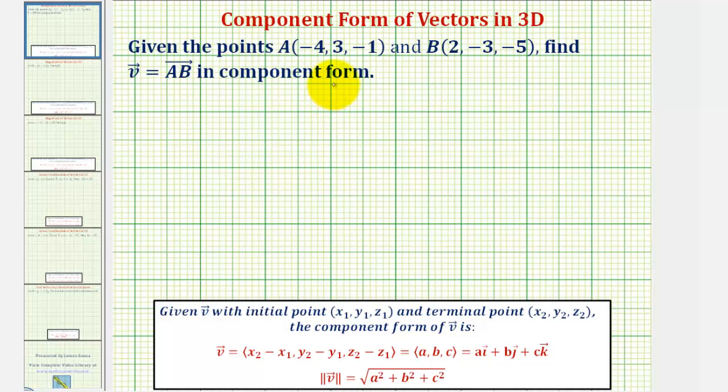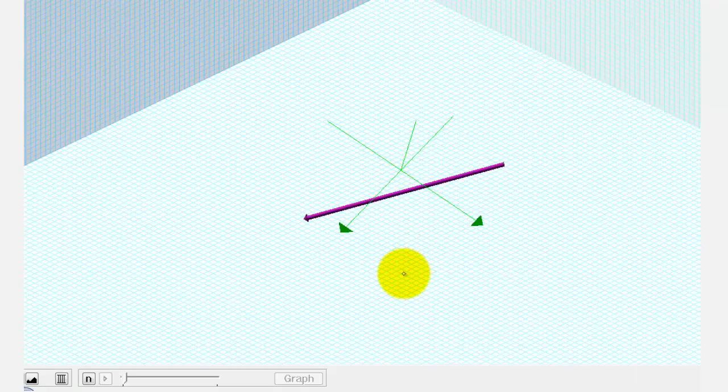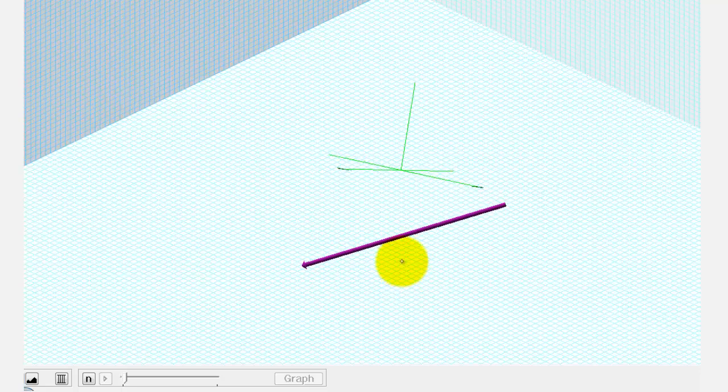Let's begin by taking a look at vector AB in space with initial point A and terminal point B. So here's a graph of vector AB with the initial point A would be here and the terminal point B would be here.